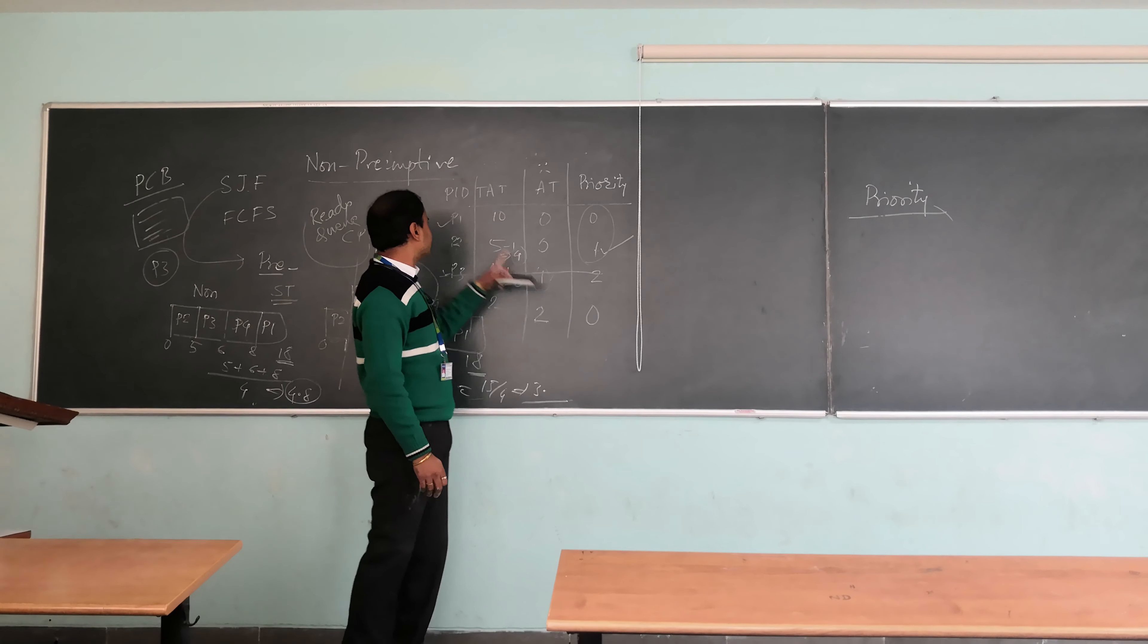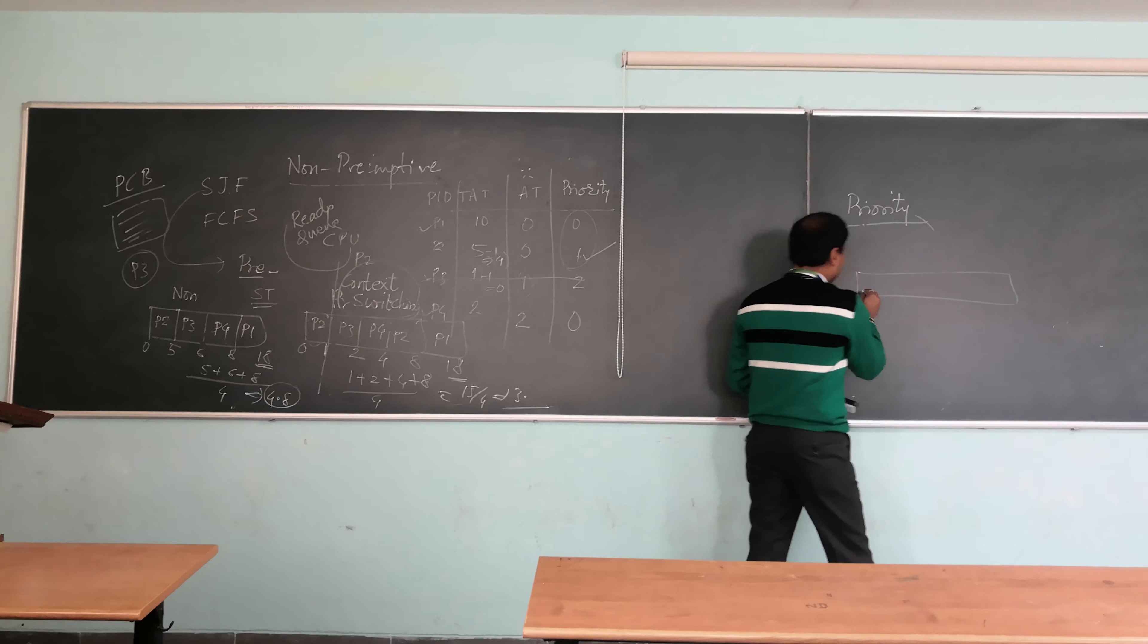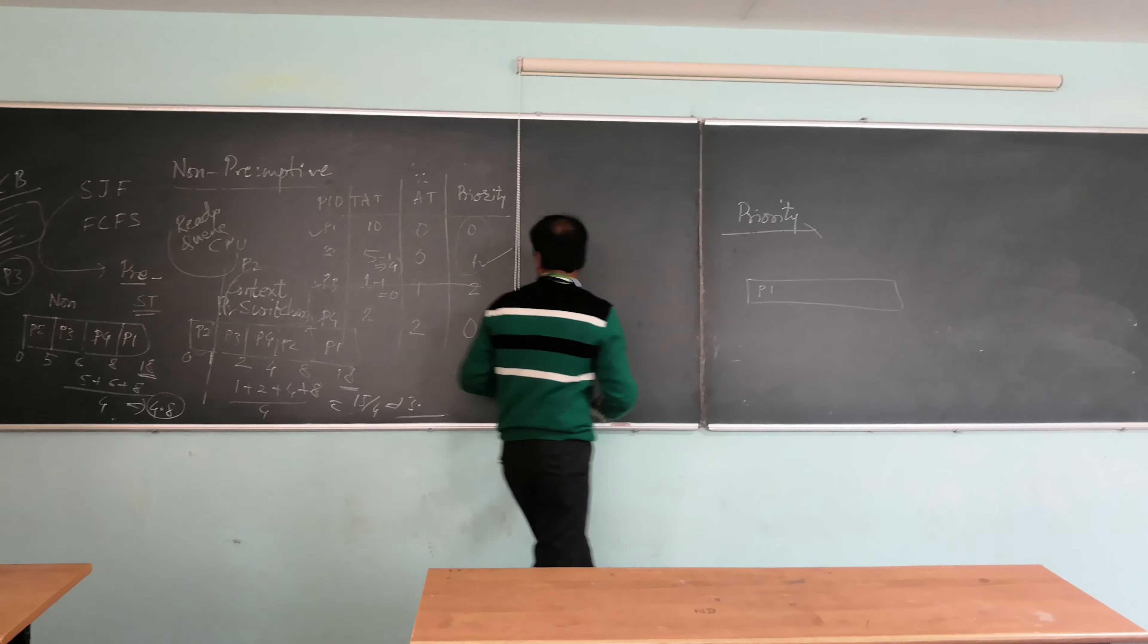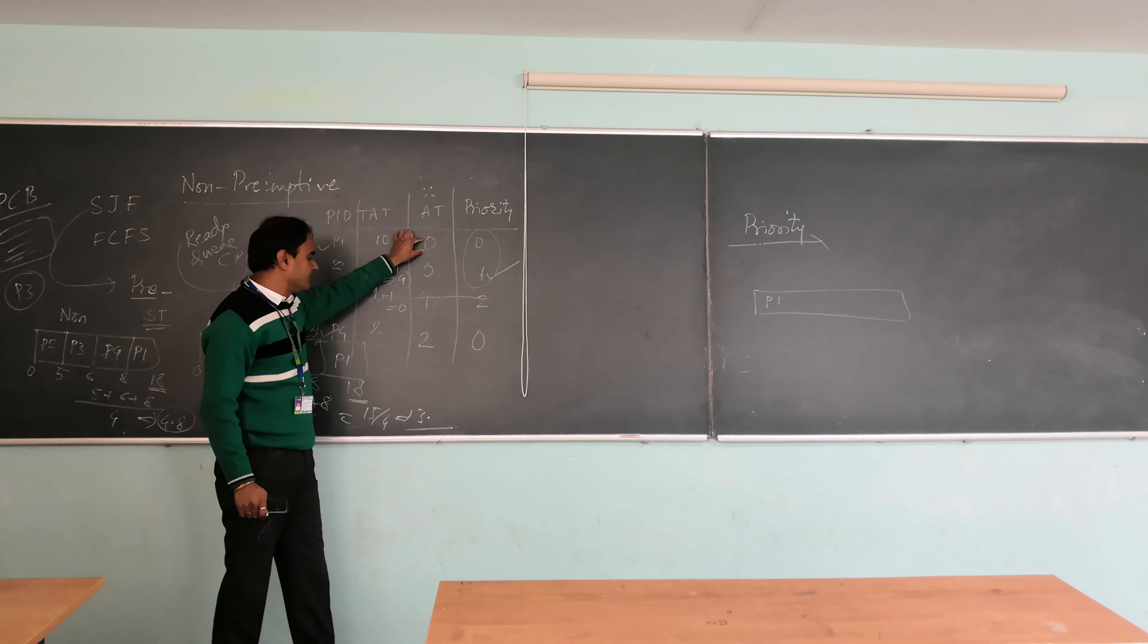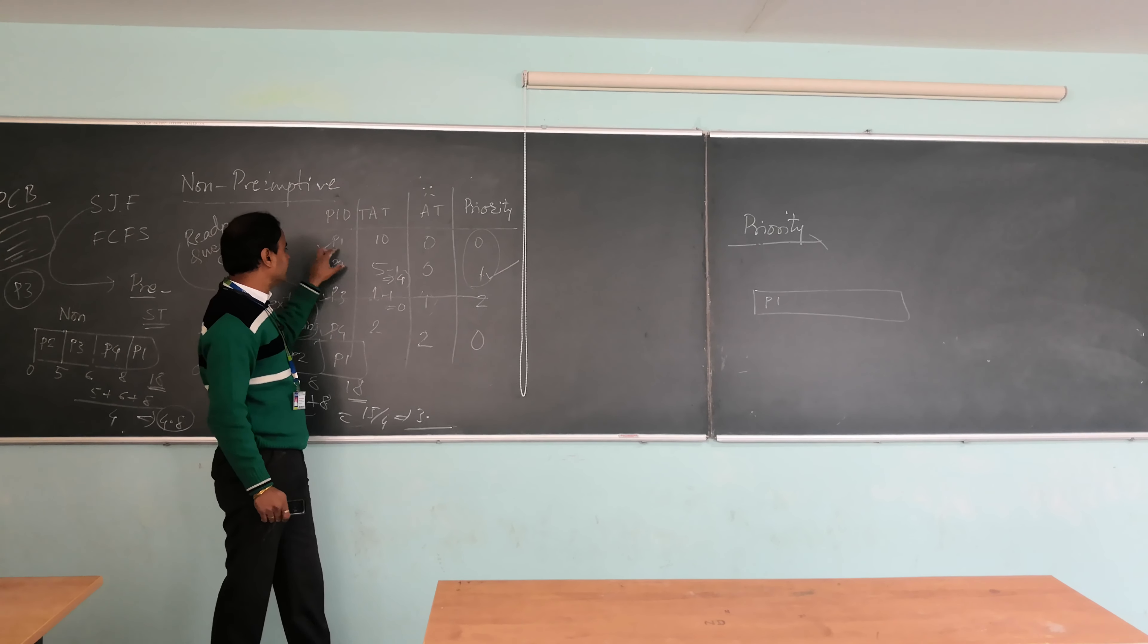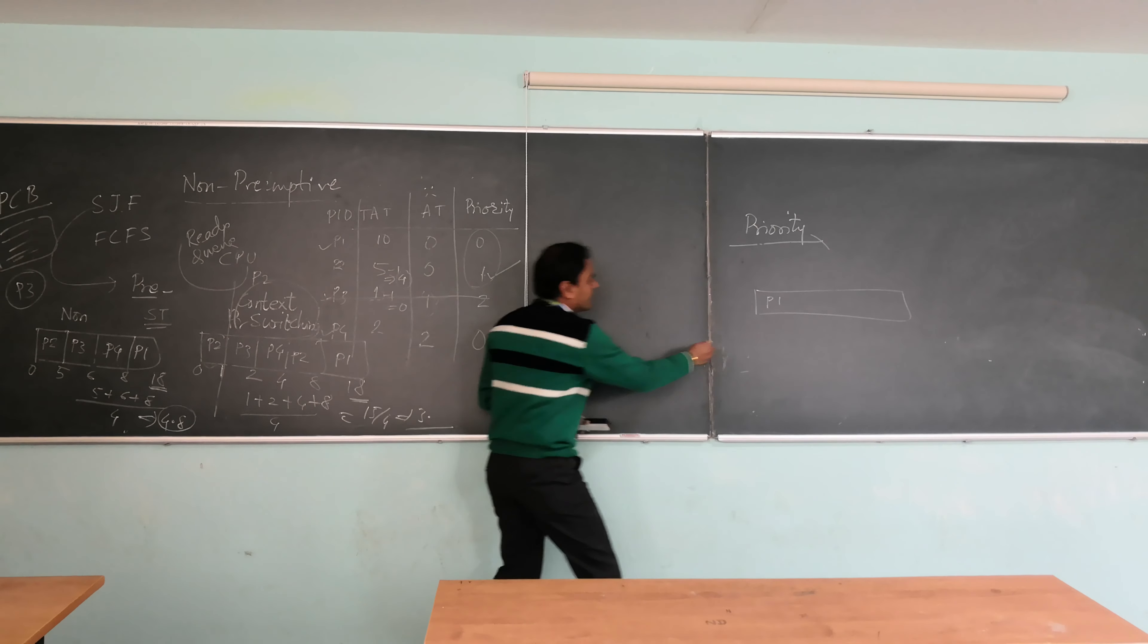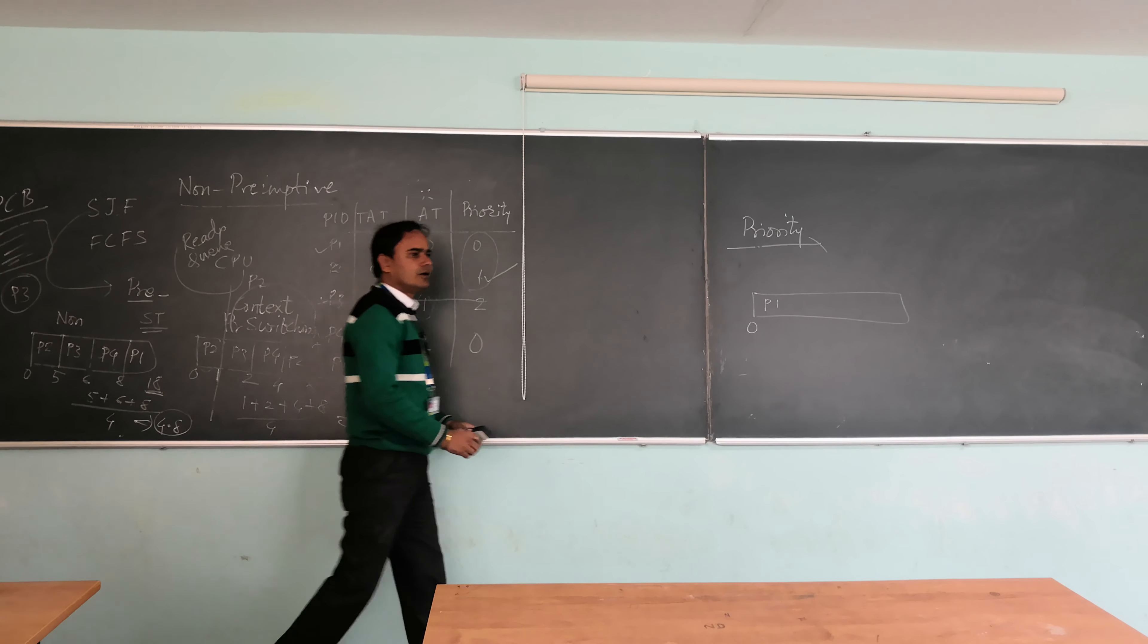To understand it better, now see that the priority P1. Priority of P1 is 0 and it arrived at zeroth time. This is coming at second, it is coming at 0. It means that you have only two choices, P1 and P2, at zeroth time.